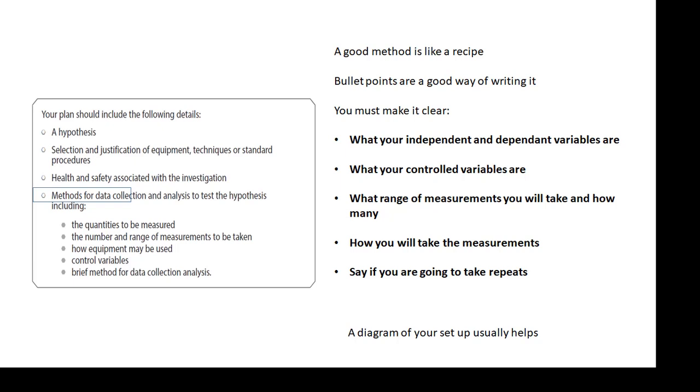A method. Now, a good method is like a recipe. And I think it's a good idea to do bullet points. It's a very good way of writing out a method. It's nice and clear. It's easy to read. It's easy for you to check to make sure that everything's in there. Say what your independent and dependent variables are. Say what your controlled variables are. Say what range of measurements you will take. And how many. Say how you will take the measurements. What equipment you'll use. And say if you're going to take repeats or not. Very important. Say I will do everything twice to take repeat readings so I can take an average. A diagram of your setup usually helps. A labeled diagram is better than a list of equipment, really.